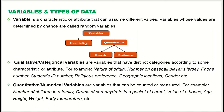Qualitative variables are also called categorical variables. These are variables that have distinct categories according to some characteristic or attribute. For example, nature of origin is a qualitative variable. The number on a baseball player's jersey — although it looks numerical, it is actually a categorical variable. Phone numbers are another example: you cannot add or subtract phone numbers like regular numbers, so they are qualitative or categorical.